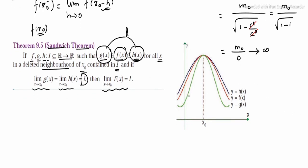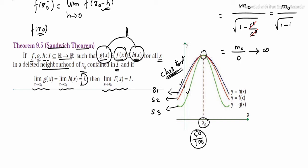To understand the sandwich theorem: consider students in a class where tests are conducted daily. Student 1 and Student 3 are the neighbor functions g(x) and h(x). On a particular day x0, if Student 1 and Student 3 both score the same mark, then by the sandwich theorem, Student 2 (the middle function f(x)) must also have that same score. This illustrates the sandwich theorem.